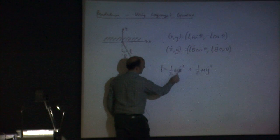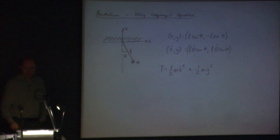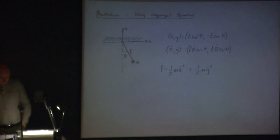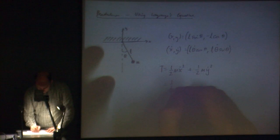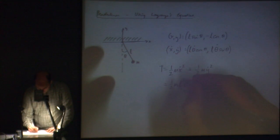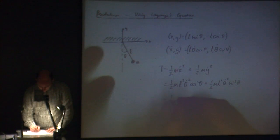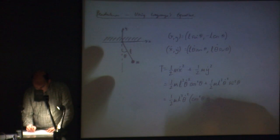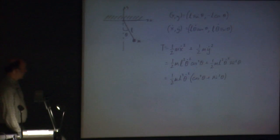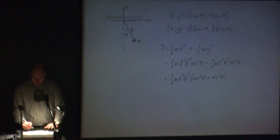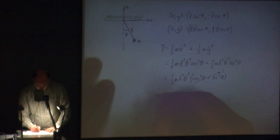The kinetic energy is ½mv² in terms of x and ½mv² in terms of y, so it's ½m x dot squared plus ½m y dot squared. Plugging in those terms, that's ½m l² theta dot squared cosine squared theta plus ½m l² theta dot squared sine squared theta. We can rewrite that as ½m l² theta dot squared times (cosine squared theta plus sine squared theta), which equals 1, so T = ½m l² theta dot squared.